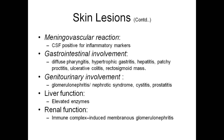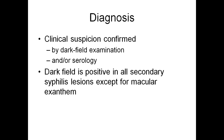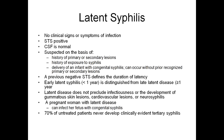Meningovascular reaction may be seen. Gastrointestinal and genitourinary involvement is also present. Liver function may be deranged and renal function may become impaired due to immune complex-induced membranous glomerulonephritis. Any system of the body can be involved. Diagnosis: clinical suspicion is always there, confirmed by dark field examination or serology. Dark field is positive in all secondary syphilitic lesions except for macular exanthem.